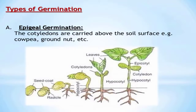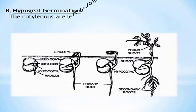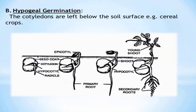Examples of epigeal germination include cowpea, groundnut, and others. The next is hypogeal germination. In hypogeal germination, the cotyledon is left below the soil level. This is the major difference between epigeal and hypogeal: in epigeal, the cotyledon is brought above the soil level, while in hypogeal, the cotyledon remains below. Most plants that go through this process are monocotyledonous plants, and almost all cereal crops undergo this type of germination.